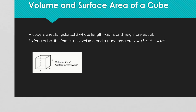Whenever you're trying to find the volume and surface area of a cube, the nice thing is that all of the dimensions are the same — every single side is the same length. So there's a simpler formula you can use. The volume is side raised to the third power, and the surface area is 6 times a side squared.